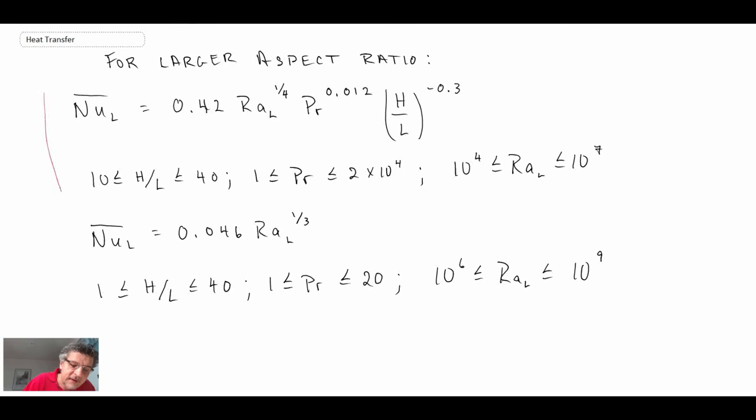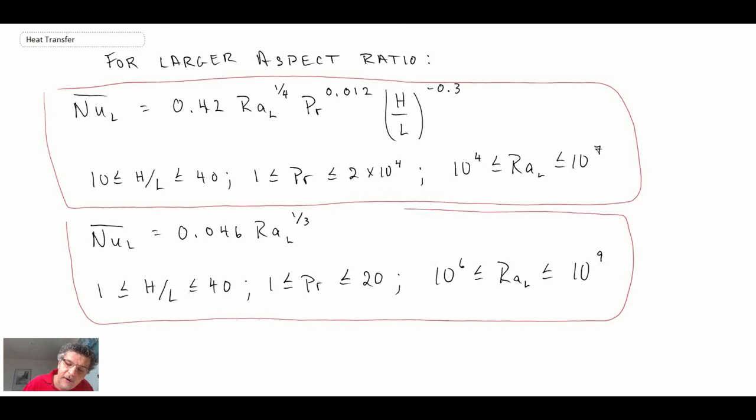So different correlations that exist for the case of larger aspect ratios, so things that you might find, as I said, in double pane windows. And those are the relations that exist, again for different Rayleigh numbers, different Rayleigh number ranges, and different Prandtl numbers.